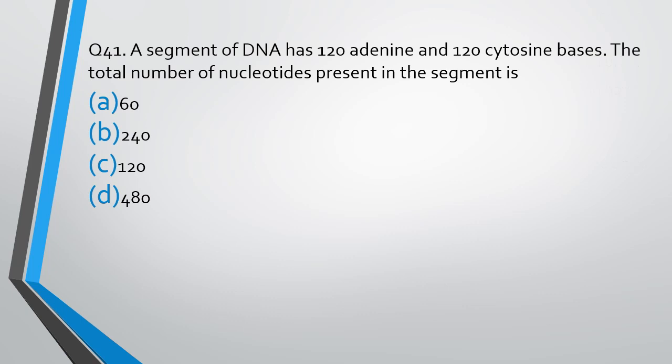Question number 41. A segment of DNA has 120 adenine and 120 cytosine bases. The total number of nucleotides present in the segment are: 60, 240, 120, or 480. The correct answer is option D — 480. Why? Because 120 adenine will bind with 120 thymine, and 120 cytosine with 120 guanine. So if you count the total, it becomes 480.